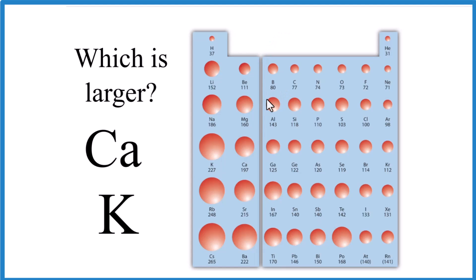So we look for calcium, which is right here, and then K, that's potassium, that's right here. And you can see potassium is larger than calcium. It has a larger atomic radius.